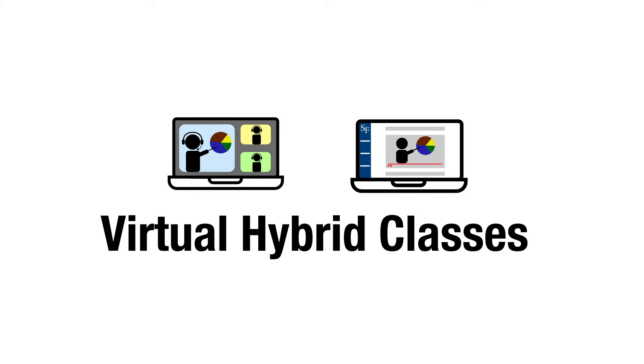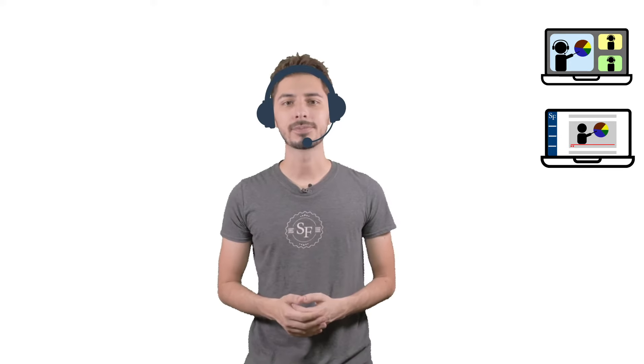Virtual hybrid classes have course materials available in Canvas through SF Online. But instead of meeting in-person, students will have class meetings on a video conferencing platform like Microsoft Teams or Zoom. As a registered SF student, you'll be able to access these platforms for free. When you register for virtual hybrid classes, you'll see the code SYNC where you would normally see a location and room number.